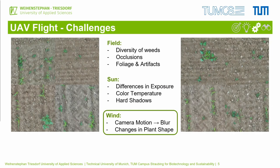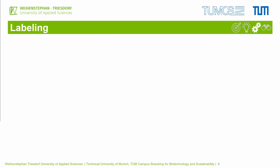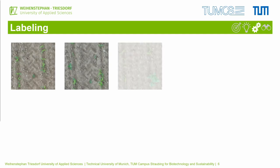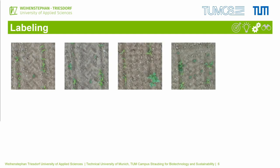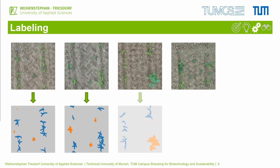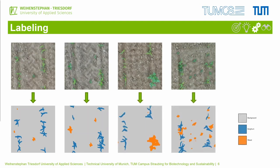When working with these models, the first step is to create a ground truth that can be compared with the model's predictions. We are using models to segment drone captures semantically, which means that we need to label each pixel of an image into its respective class. We decided to use three classes: the background class contains the field, foliage and artifacts and is denoted in grey; the weed class contains all weed species denoted in orange; and the sorghum class is denoted in blue.